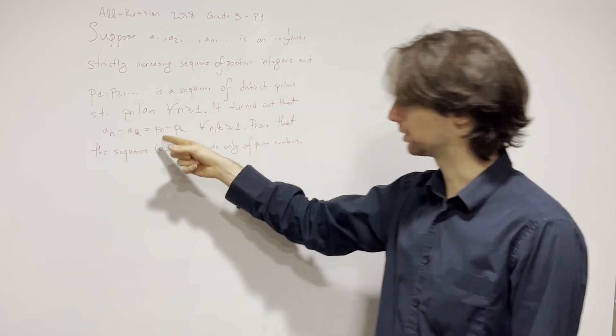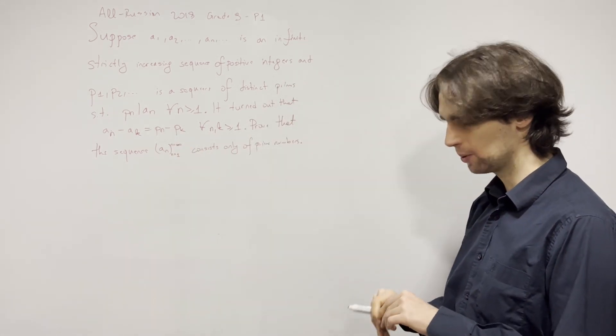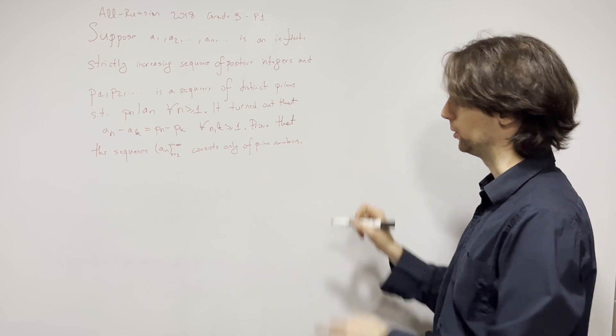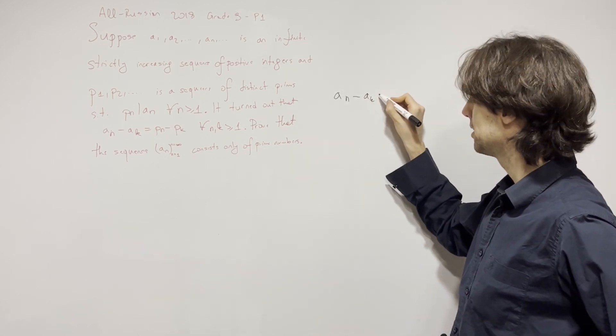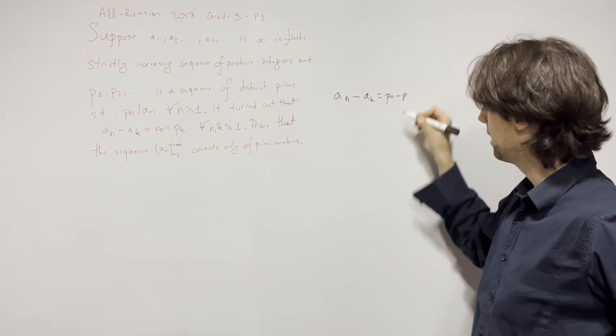Now, how can we use this condition? That's where I want you to pause for three minutes and figure out how you can use it. The answer is you have a_n minus a_k equals p_n minus p_k for every pairs of n and k.